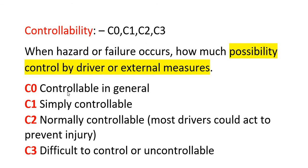The third parameter is controllability, which describes how possible it is to control or avoid a hazard when it occurs — whether by the driver or external measures. It is measured as C0 (controllable in general), C1 (simply controllable), C2 (normally controllable), and C3 (very difficult to control).